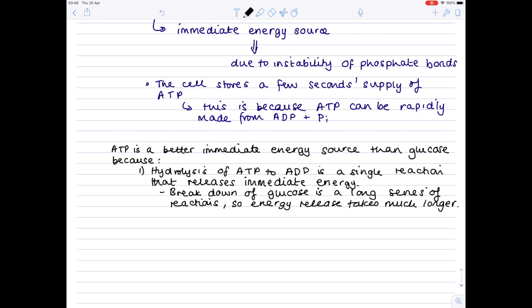And then secondly, each ATP molecule releases far less energy than a glucose molecule. Well, you might think that that is a bad thing because surely more energy is better, but crucially, this energy is far more manageable and therefore, easier to use in chemical reactions.